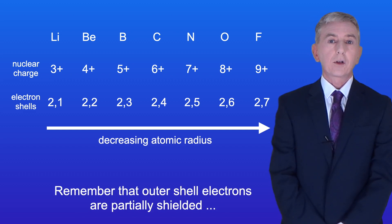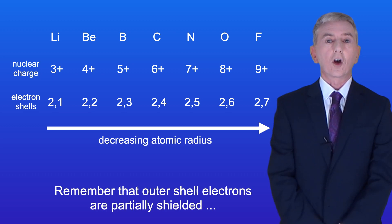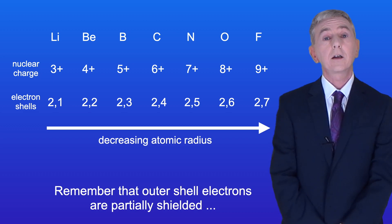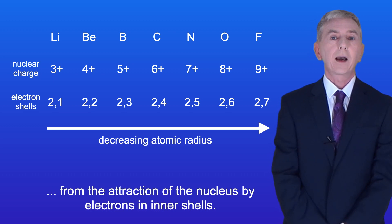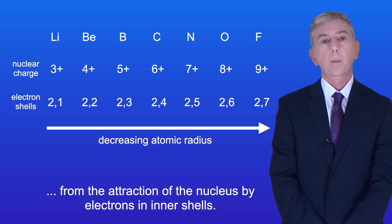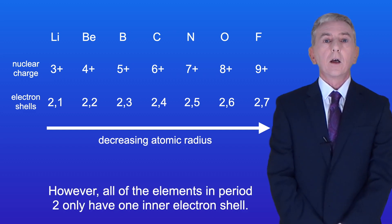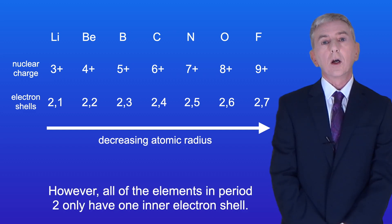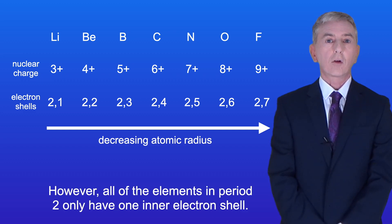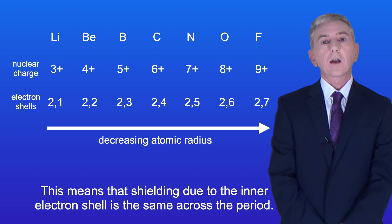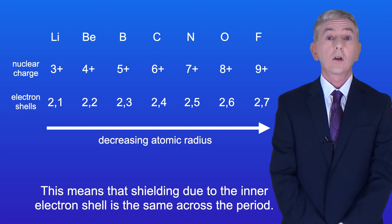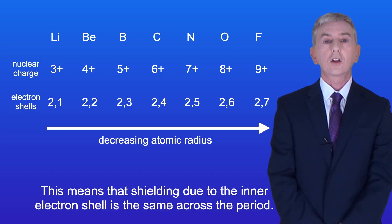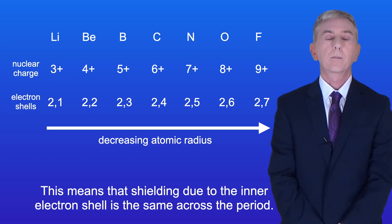Remember that outer shell electrons are partially shielded from the attraction of the nucleus by electrons in inner shells. However, all of the elements in period two only have one inner electron shell, so this means that shielding due to the inner electron shell is the same across the period.